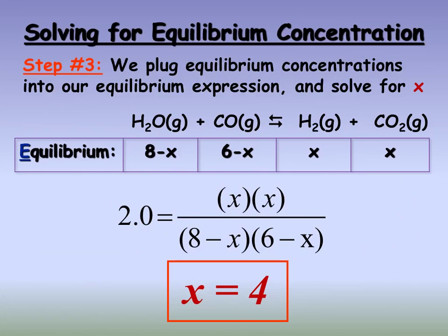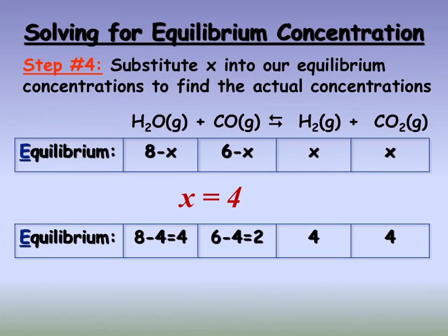x is not our final answer — it's merely a way to obtain our final amounts. The final step is always plugging in the value of x. When you do that, at equilibrium we would have four water molecules, two molecules of carbon monoxide, four molecules of hydrogen gas, and four molecules of carbon dioxide.